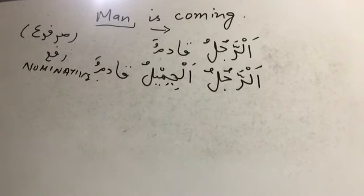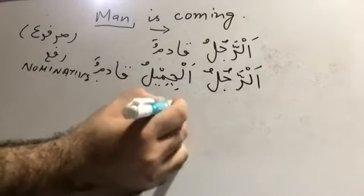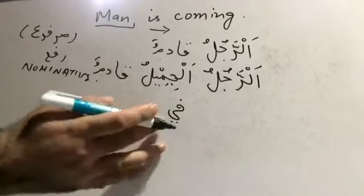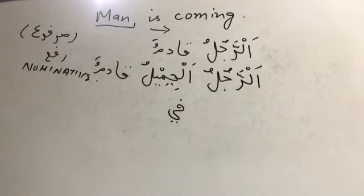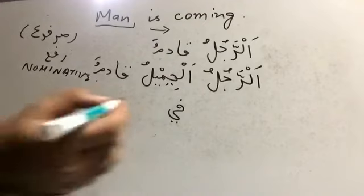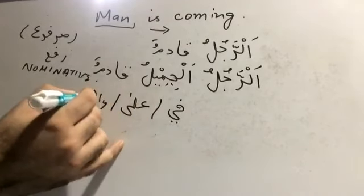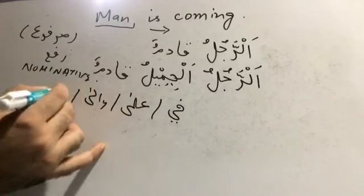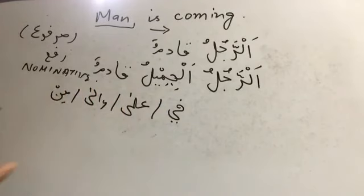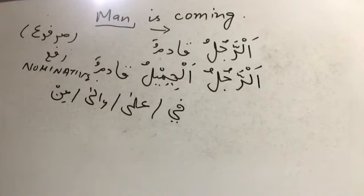The first scenario is when there is a haruf ul-jar, like fi, ala, ila, min. These are all haruf ul-jar, and whenever they come before the noun, they put the noun into the genitive case. Like for example in the Quran we find min al-masjid al-haram ila al-masjid al-aqsa.